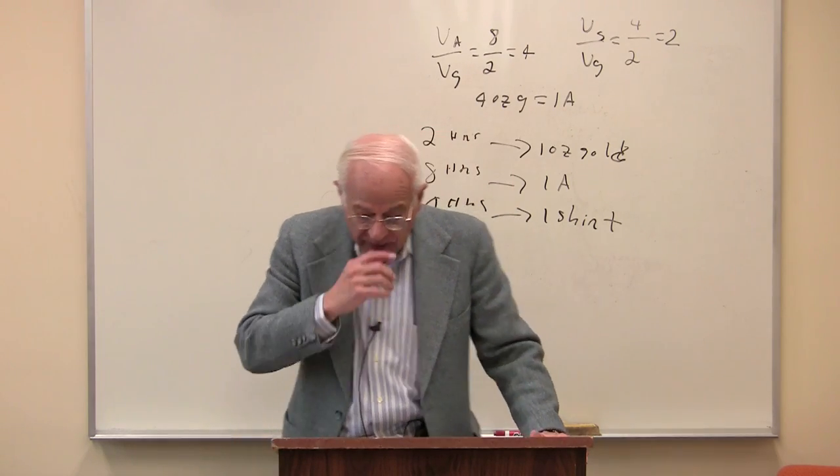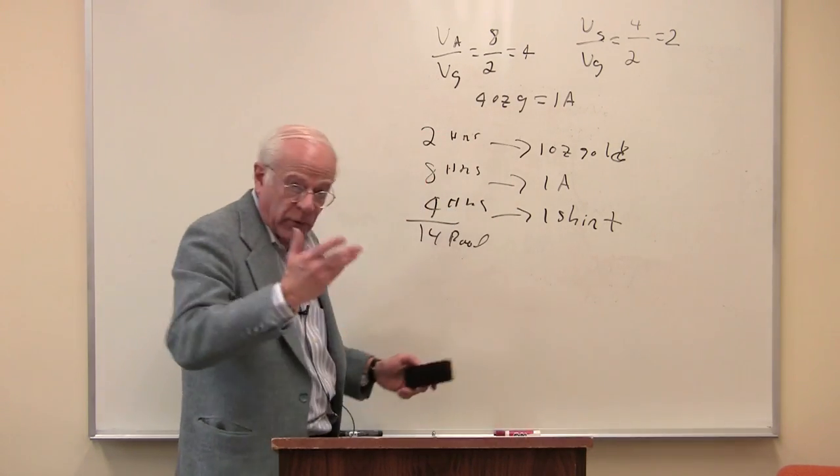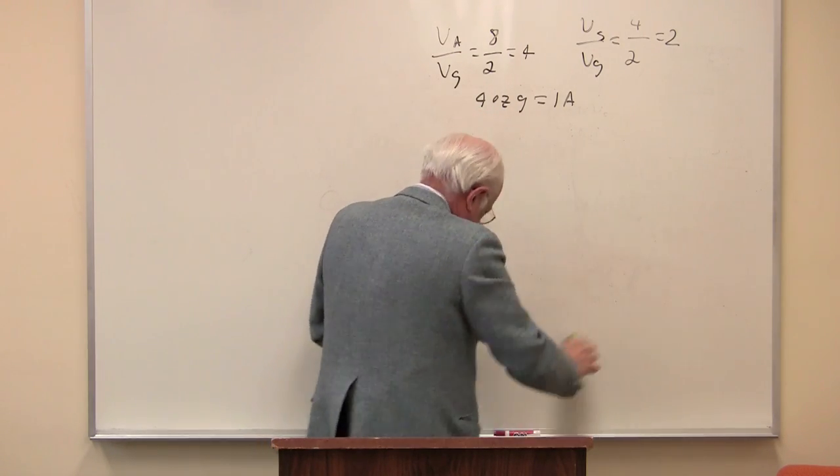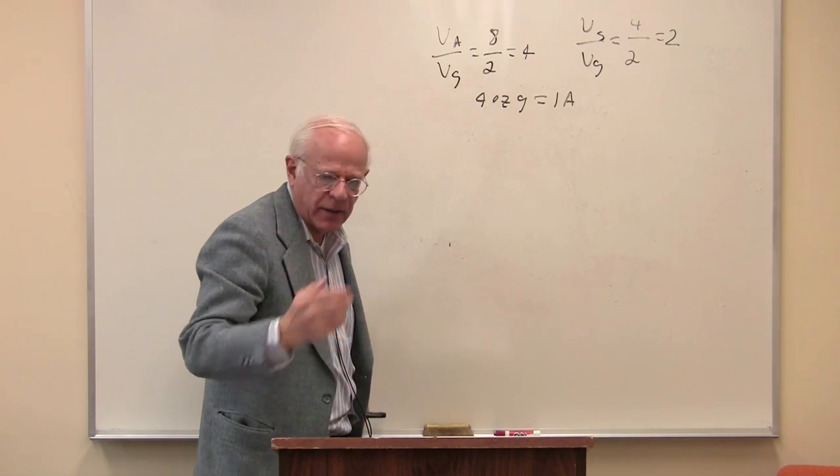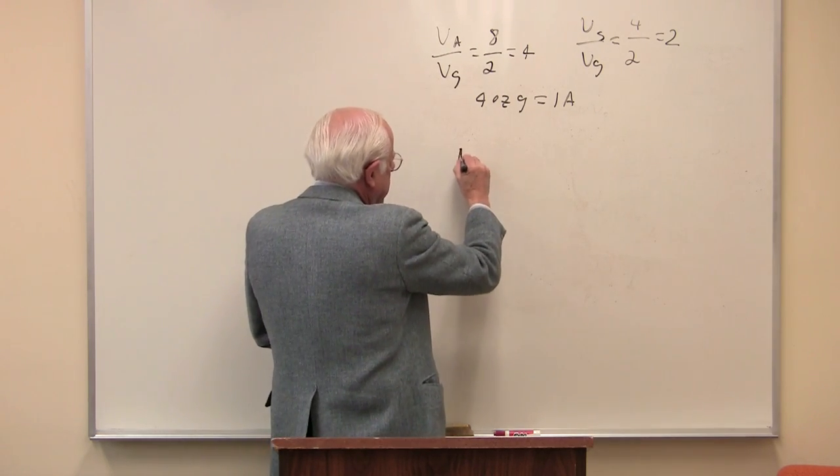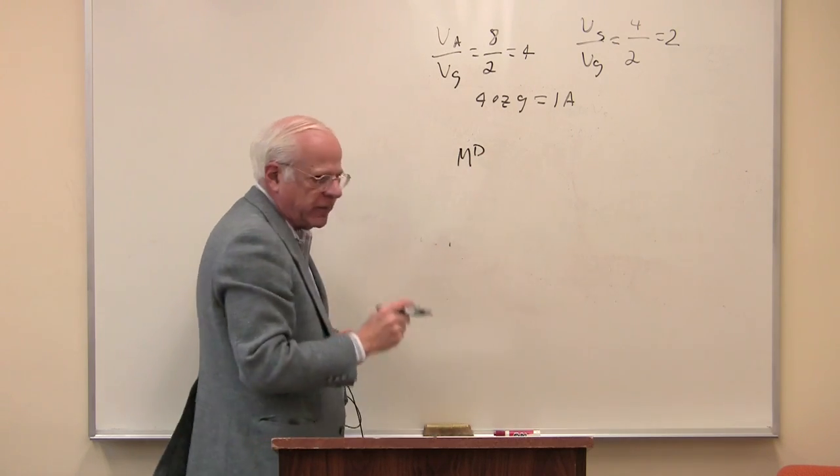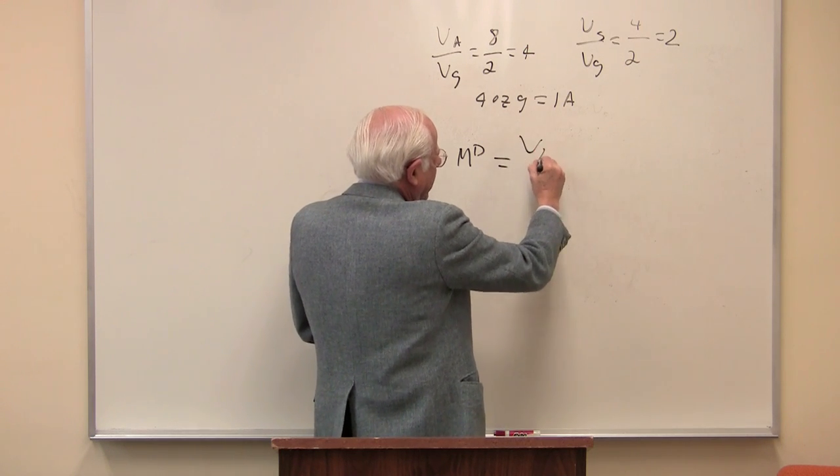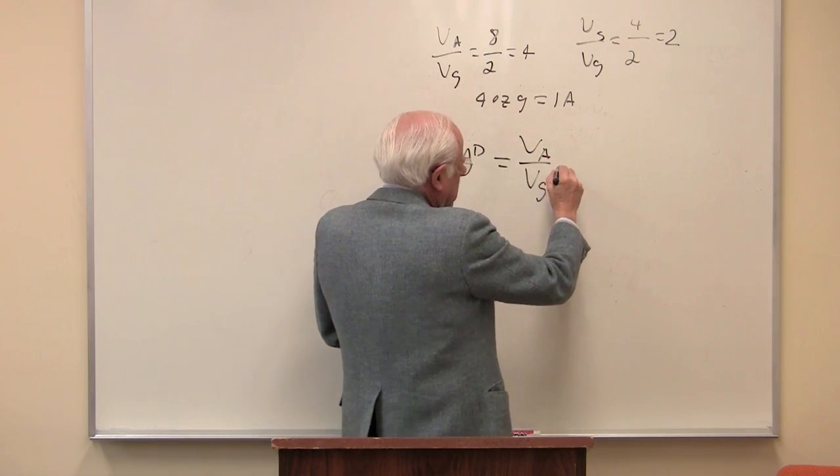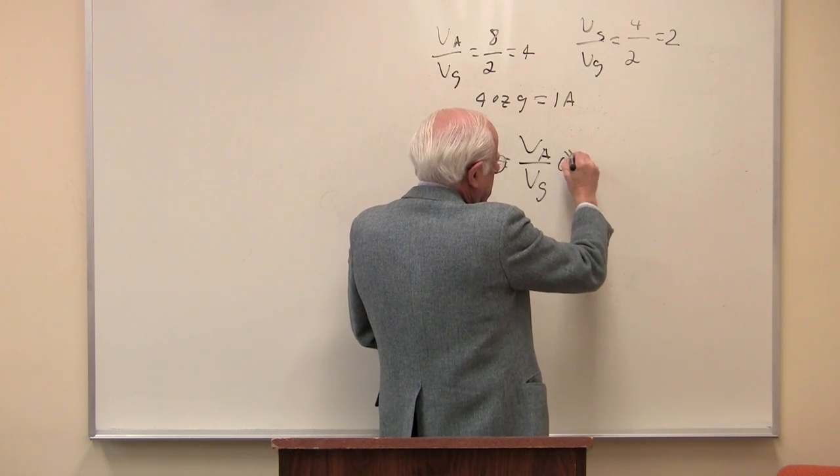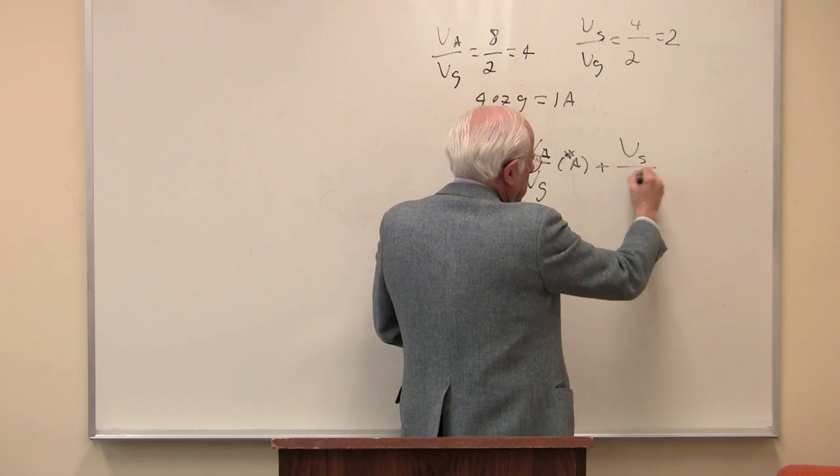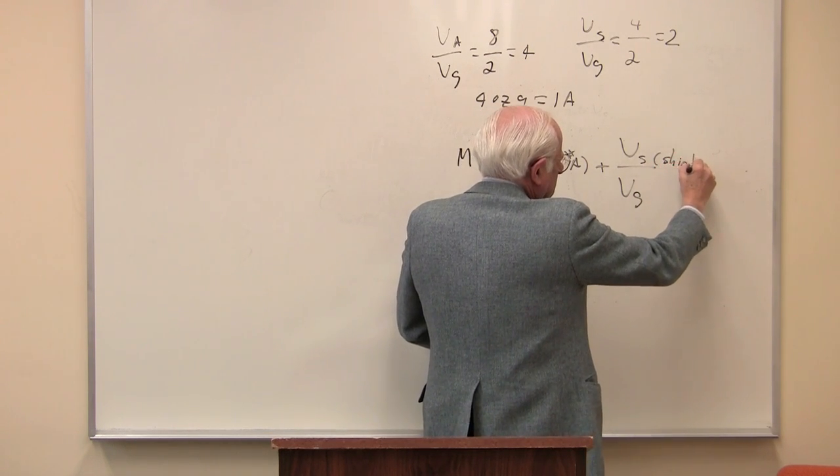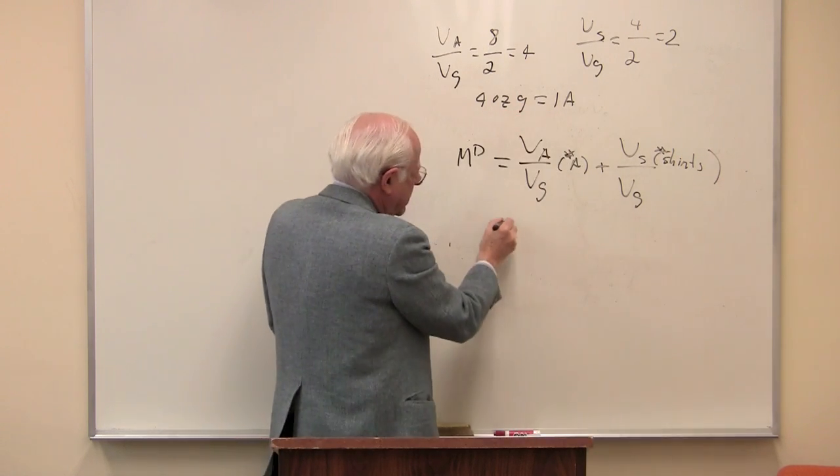So what we have here then is another equation we can easily write. We can ask, how much money do we need? How many dollars do we need in this society? In other words, what is the demand for money in this society? Demand for coins? Demand for dollars? Well, let's write it down. We have the value of an apple over the value of gold times the amount of apples plus the value of shirts over the value of gold times the number of shirts.